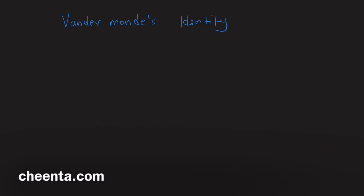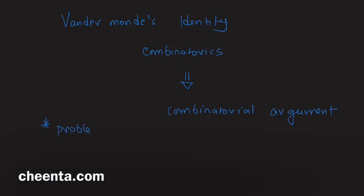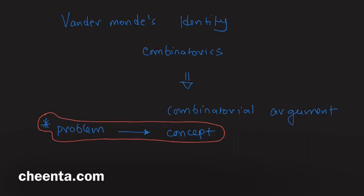Let's learn about Vandermonde's identity — actually it's a Chinese identity from the 13th century, later rediscovered by Vandermonde. It's an idea from combinatorics, and the proof involves a very powerful idea called a combinatorial argument. As usual, we will learn this using a problem: we start with a problem and then gradually understand the concept. This is actually how all Chintaka classes work.